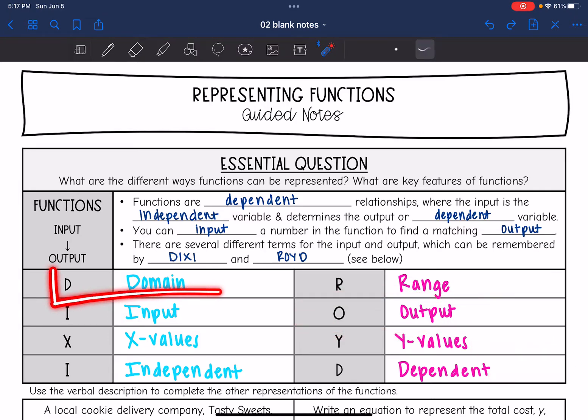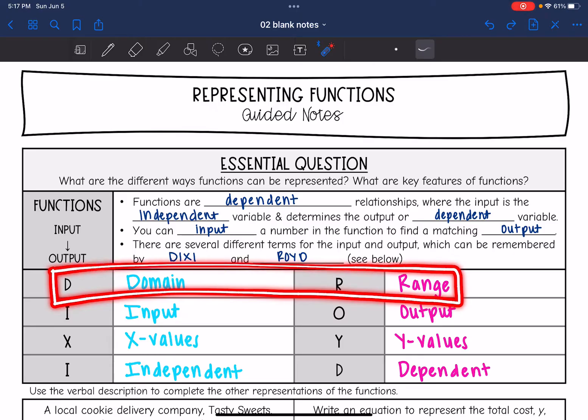So domain and range are probably the new terms that you are hearing today. Hopefully you've heard the other ones before. Domain and range are new in Algebra 1, and you'll hear a lot more about them throughout this course.